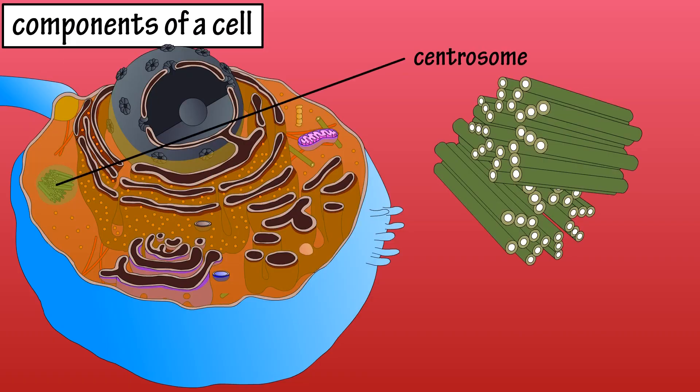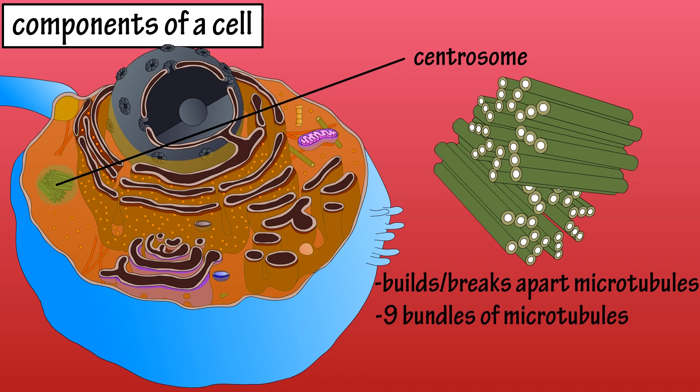The centrosome is typically found near the nucleus, and it builds and breaks apart microtubules in the cell. It consists of centrioles that are perpendicular to each other, which have nine bundles of microtubules with three tubules in each bundle.